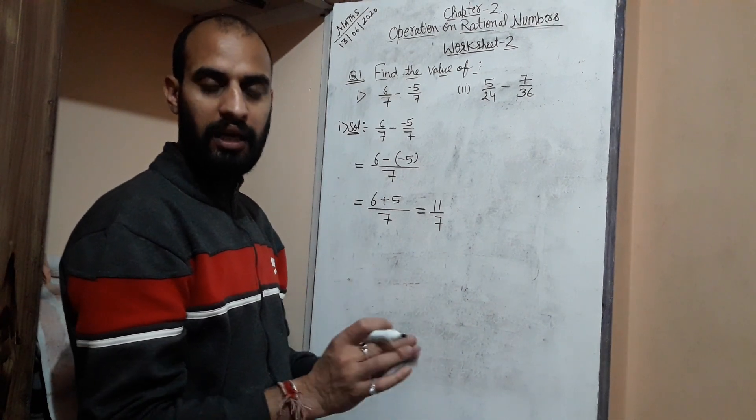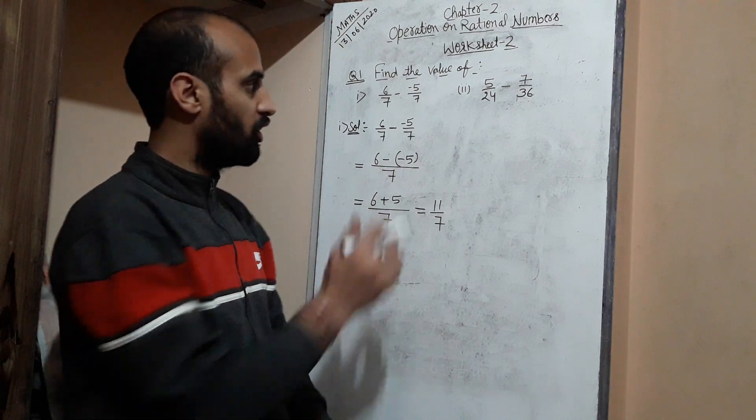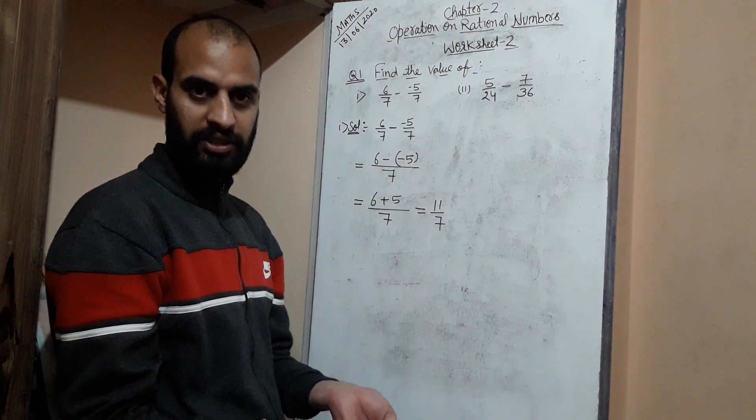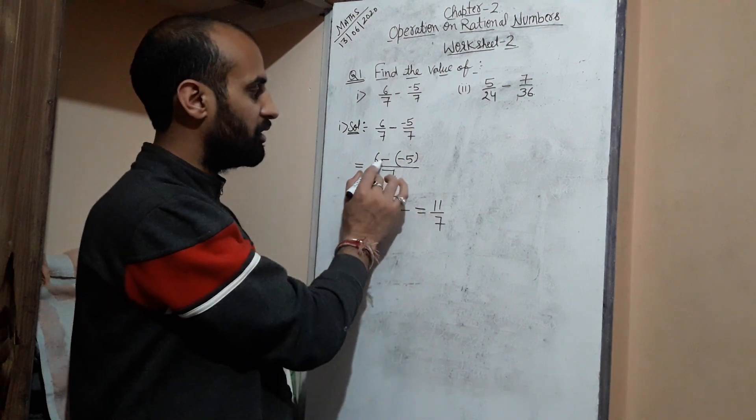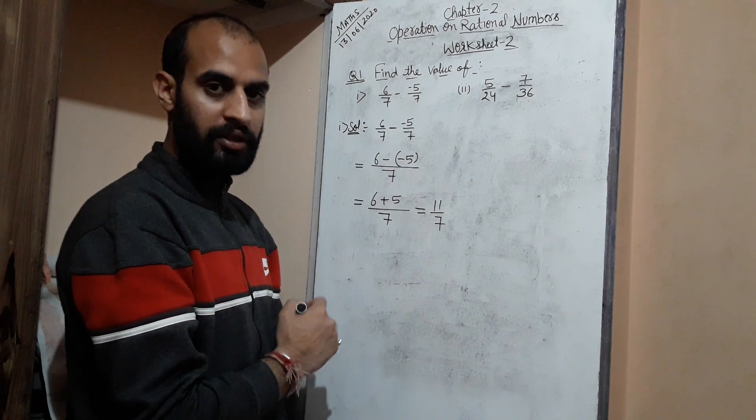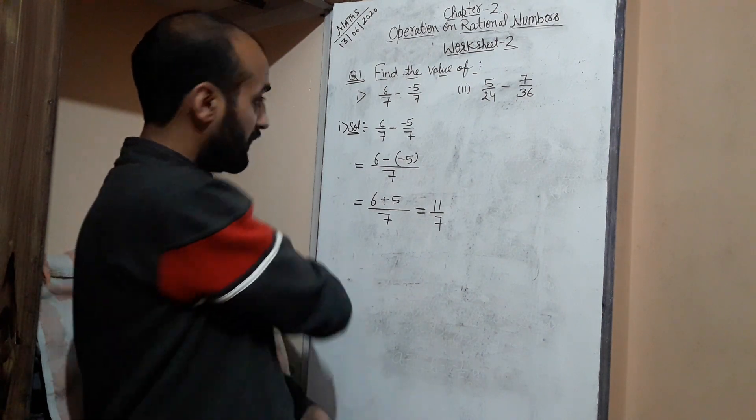This is a very easy part, my dear students. Whenever you have a common denominator—that means the same denominator—then simply, if addition is there then add, if subtraction is there then subtract. But keep in mind these signs: here minus into minus becomes plus. The overall answer is 11/7.